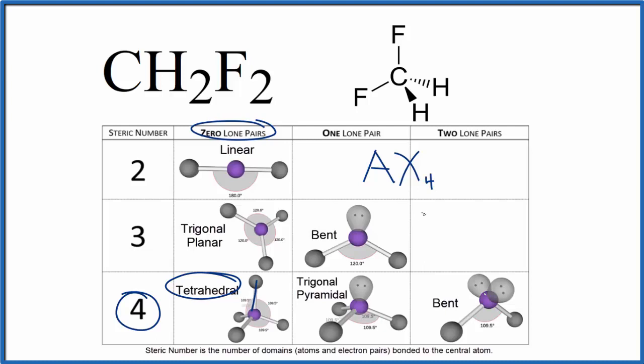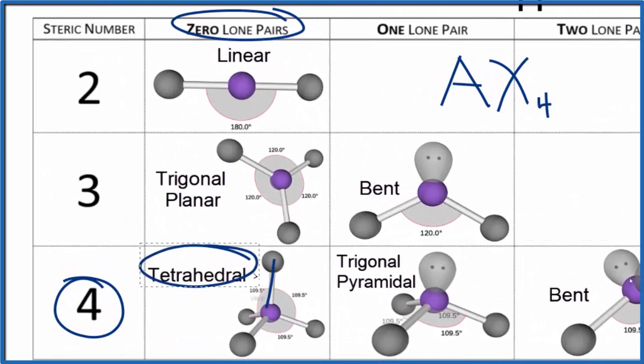And then E is the number of lone pairs. But again, the carbon doesn't have any lone pairs. All of its electrons are involved in these chemical bonds, so we don't have E. If you look up AX4, you'll find that it's tetrahedral, and the bond angles again are about 109.5°.